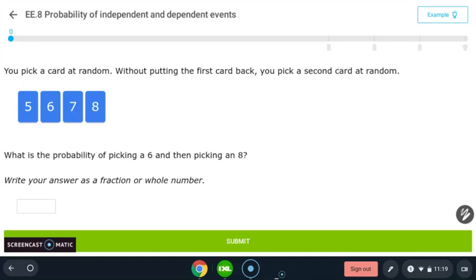We're going to take a look at some examples of IXL 8th grade level EE.8, which is the probability of independent and dependent events. So independent events, just for some vocabulary, independent means one action does not cause another action to happen or it does not affect it at all.